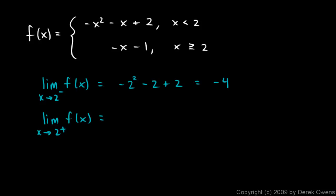And the limit as x approaches 2 from the right, that's going to be negative 2 minus 1 is negative 3. So the limit as x approaches 2 does not exist because the left side and right side limits are not the same.